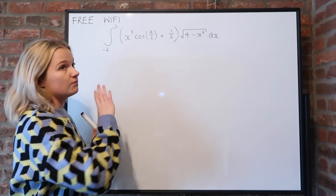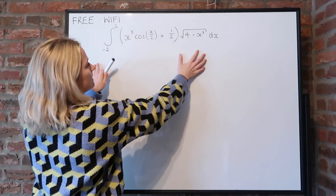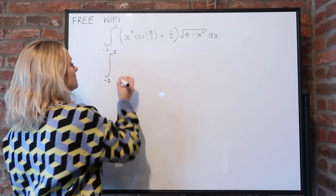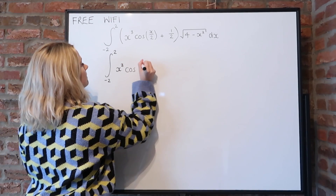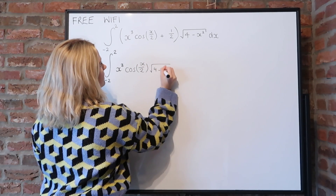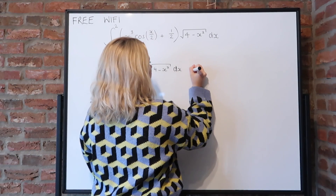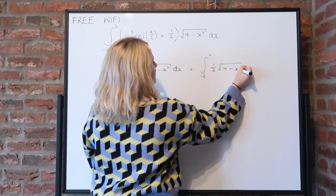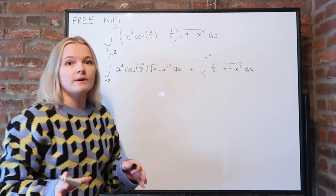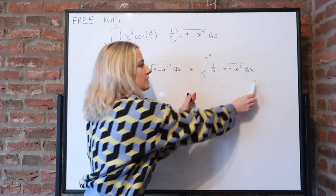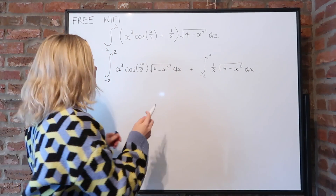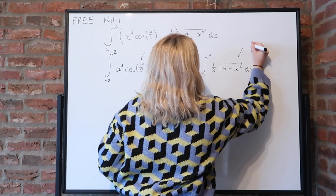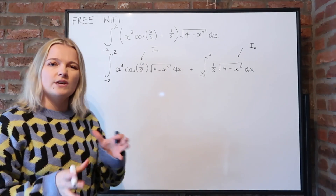You might notice there is one quite obvious thing we can do to begin with, and that is just expanding this out into two different integrals. What we get is the integral from minus 2 to 2 of x cubed cos(x/2) over the square root of 4 minus x squared dx, plus the same integral but this time we have a half times the square root of 4 minus x squared dx. We'll label these I1 and I2 and treat both integrals separately.